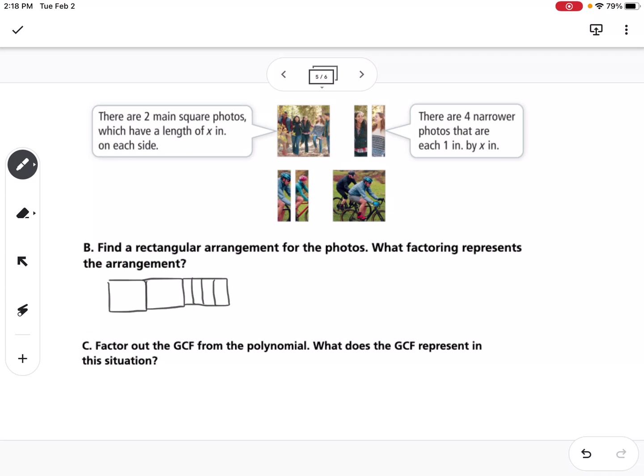So what factoring represents that? That would be x times this distance here. We have 2x. This would be x, x, and these are all 1s. So this would be 2x plus 4.